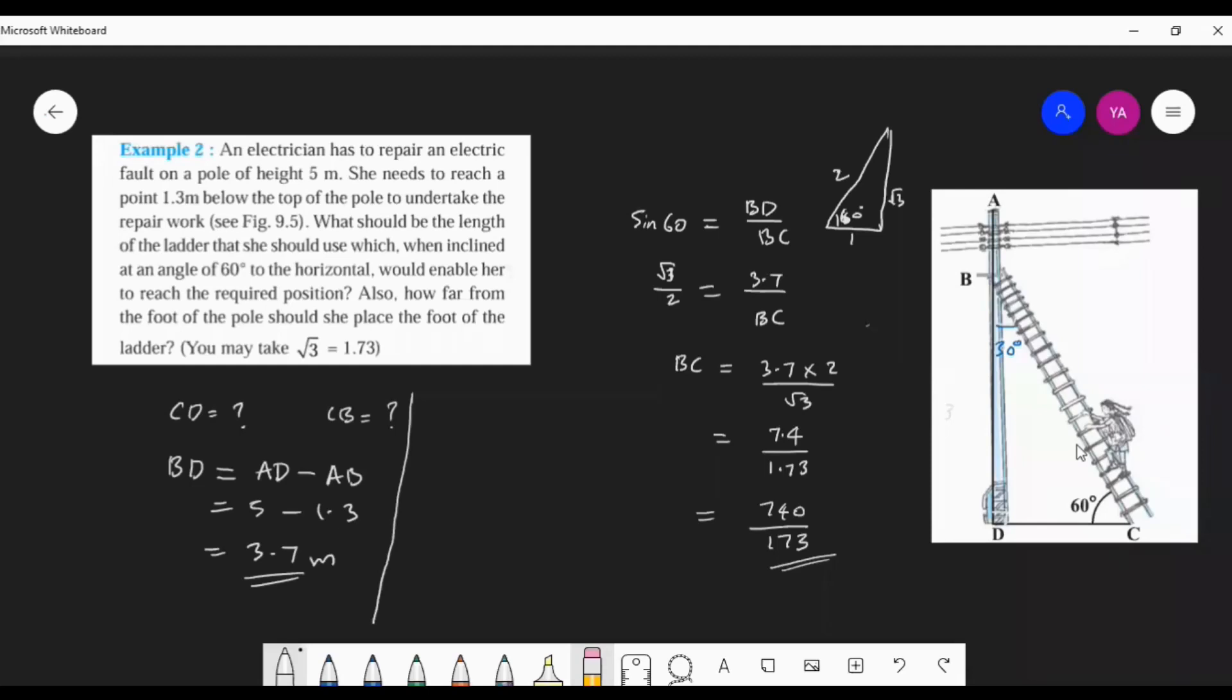BC is equal to 7.4 by root 3. So I simply take here tan. We know the opposite side. So tan 60 is equal to the name, how will come the sides? BD by CD. So tan 60, what is tan 60? Root 3. Root 3 is equal to BD by CD.